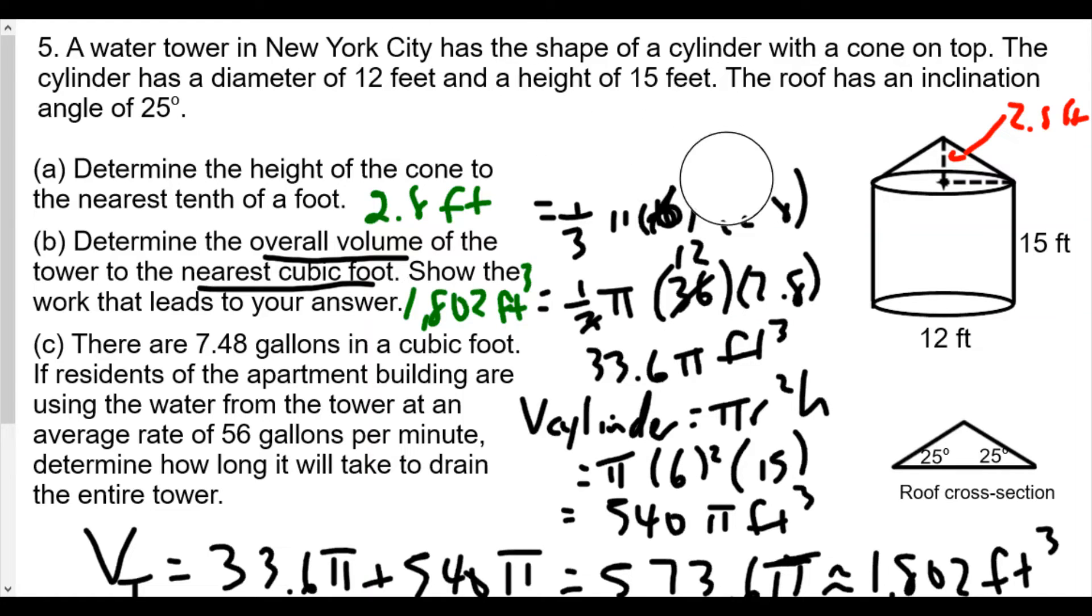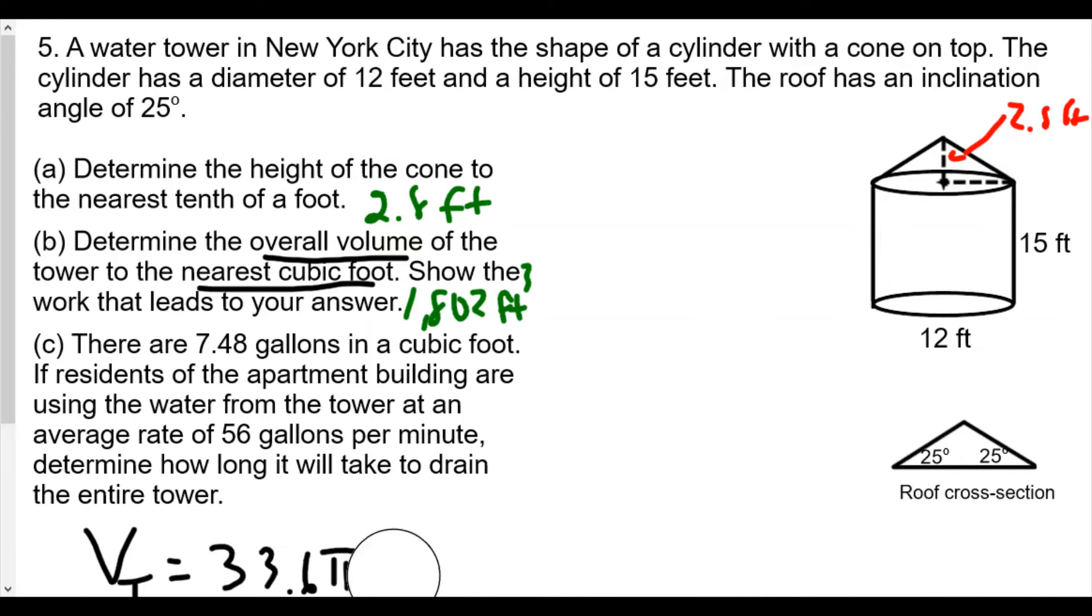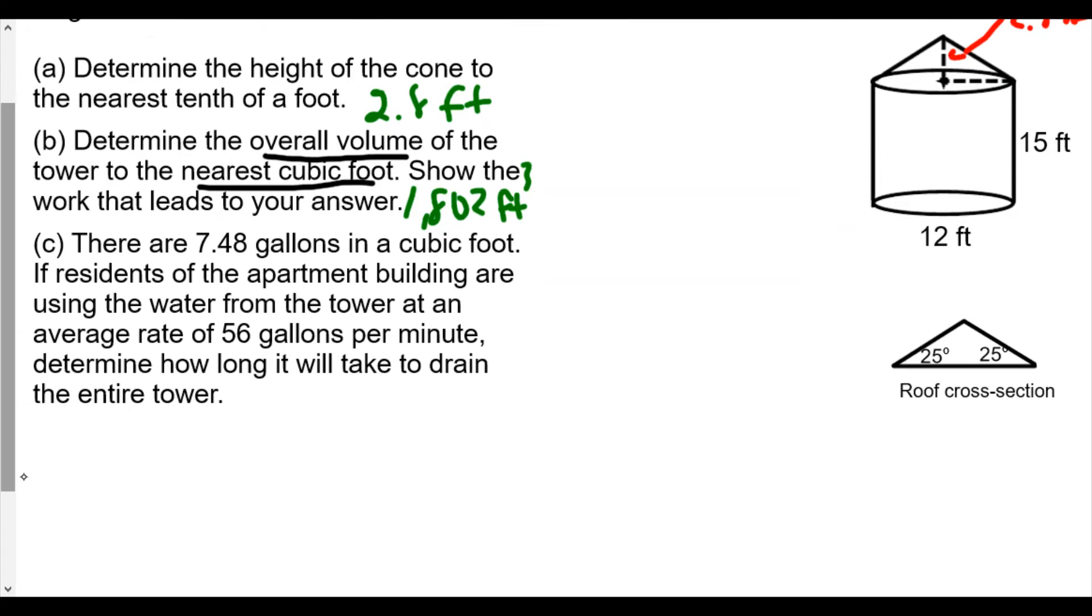For part C, it says there are 7.48 gallons in a cubic foot. If residents of the apartment building are using water from the tower at an average rate of 56 gallons per minute, determine how long it takes to drain the entire water tower.